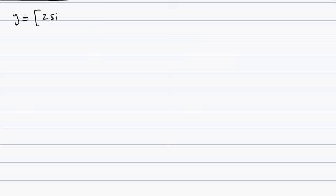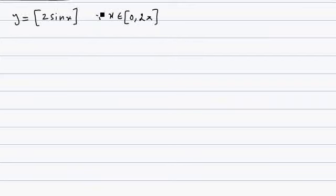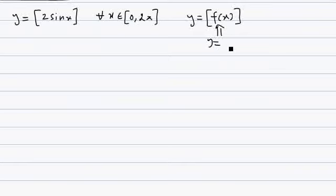We are going to learn how to draw the graph of greatest integer of 2sin(x) for all x belonging to 0 to 2π. With this example we are going to understand how we can plot the graph of greatest integer of any function f(x) — that is, if we have the graph of y = f(x), how can we draw the graph of greatest integer of f(x).